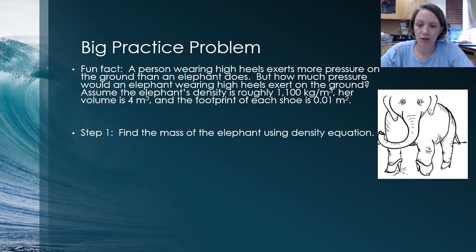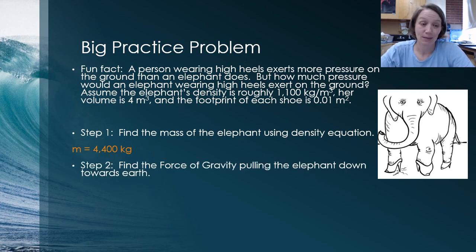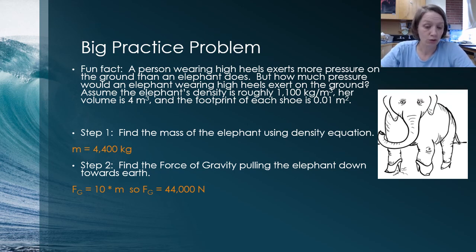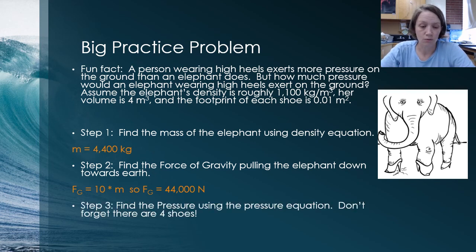Step one, find the mass of the elephant using the density equation. So we're going to use density and volume to calculate the mass. We end up getting 4400 kilograms for the mass of the elephant. Step two is to calculate the force of gravity because that's the force that we're actually going to be pushing down on the earth through the high heels. And gravity is equal to the strength of the gravitational force field on earth, which is 10 times the mass of the object, which gives us 44,000 newtons of gravitational force.